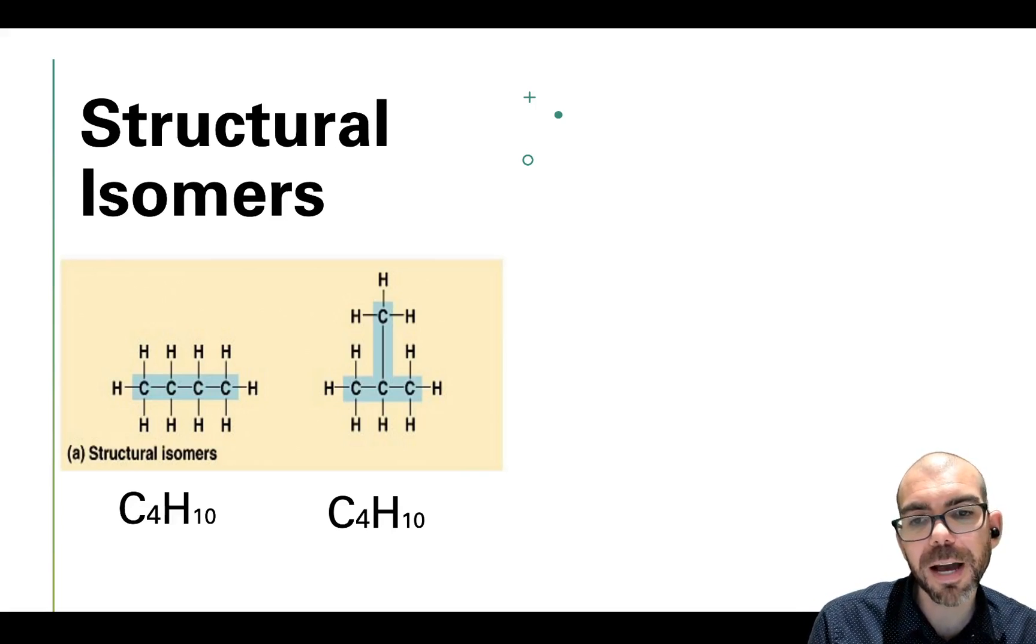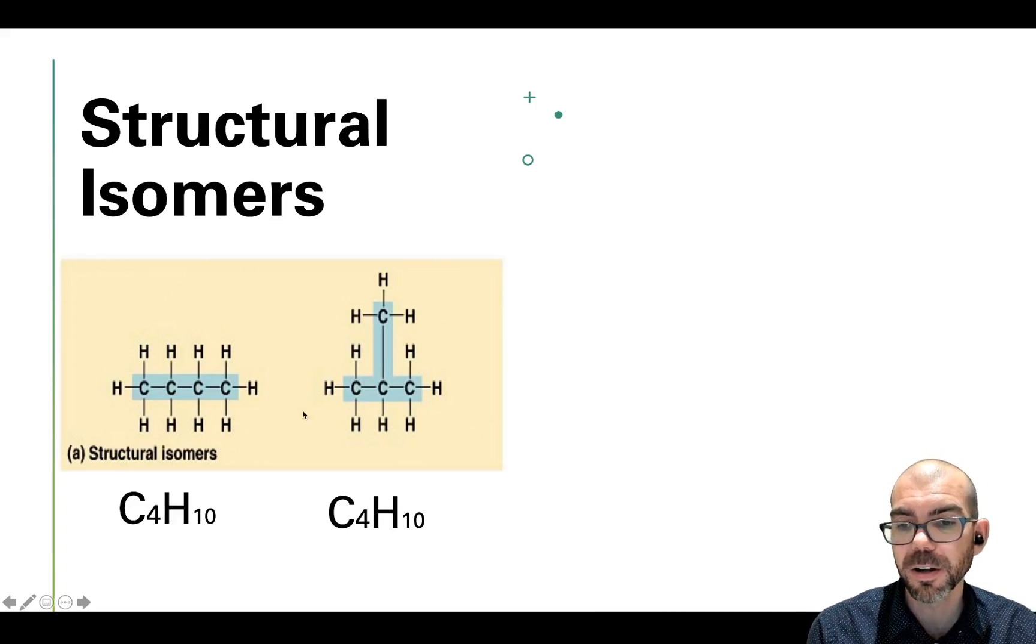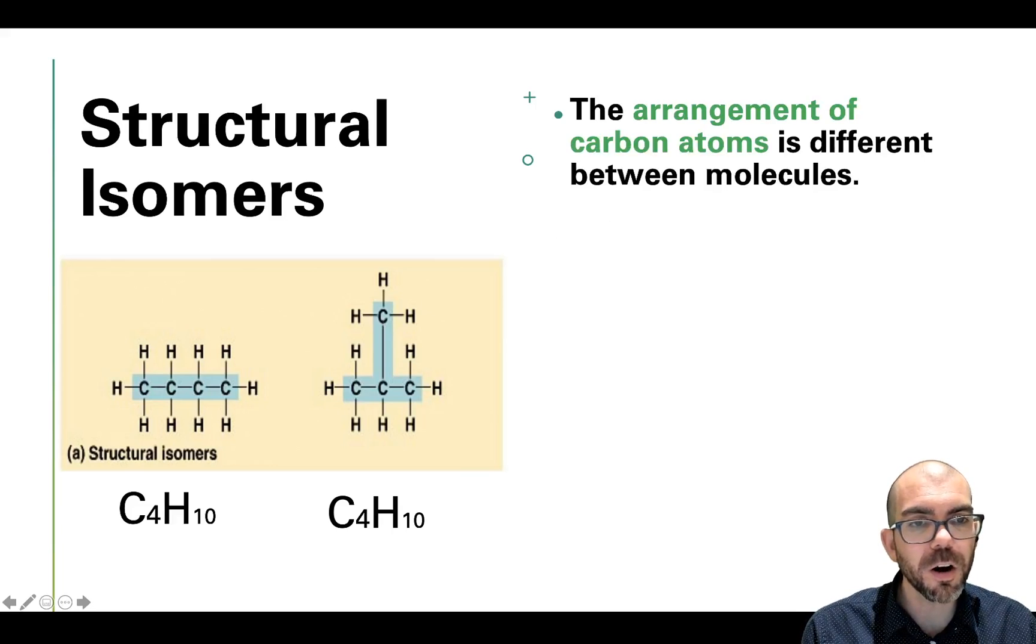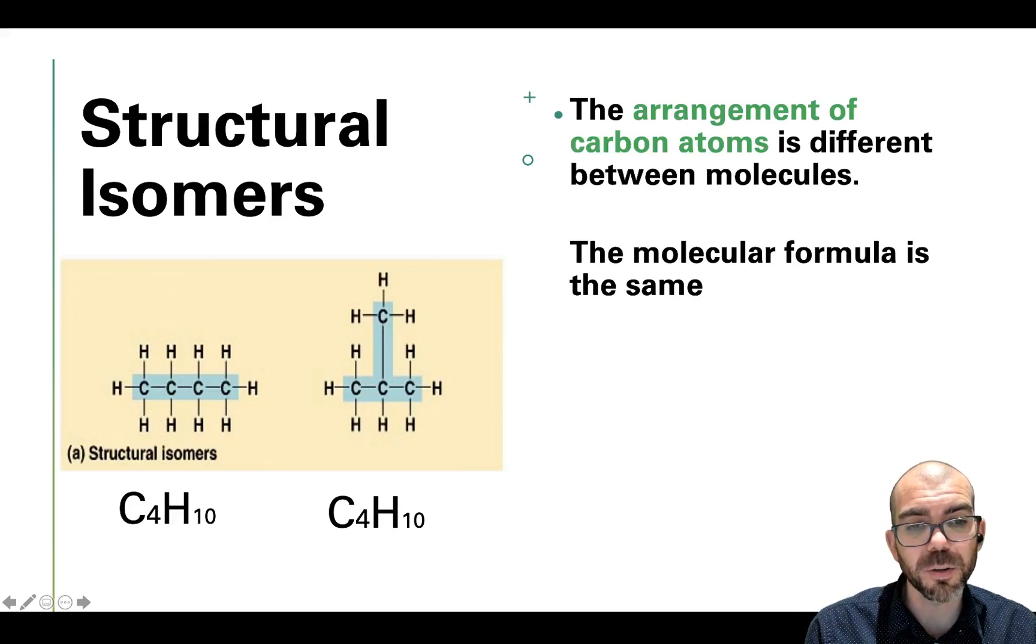One thing that can happen with isomers is you can have something called a structural isomer like you can see here. These both are C4H10, but this one's in a straight line, whereas this one, its central carbons are ordered in a different way. We have a straight line on the bottom and one protruding up. The arrangement of carbon atoms is different between these molecules, even though the molecular formula is the same. That is how we define a structural isomer. Same formula, just different arrangement of the carbons.